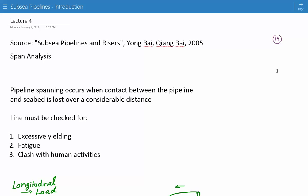So pipeline spanning occurs when the contact between the pipeline and seabed is lost over a considerable distance. If this occurs, normal code requirements require that the line be investigated and checked for excessive yielding, fatigue, and clash with human activities, and these may include like fishing.